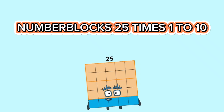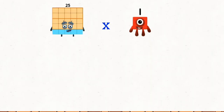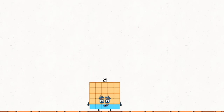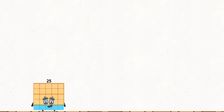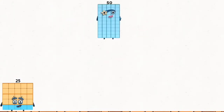Number blocks, 25 times 1 to 10. 25 times 1 equals 25. 25 times 2 equals 50.